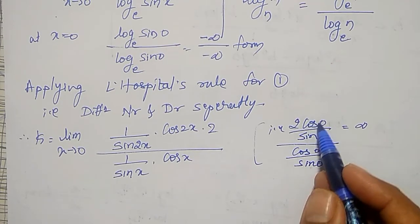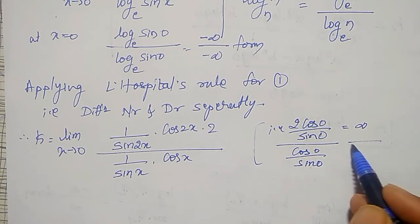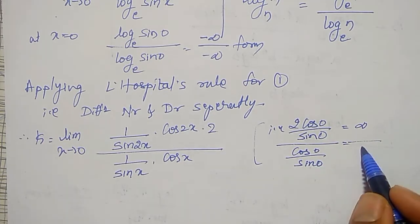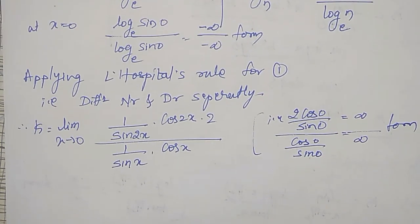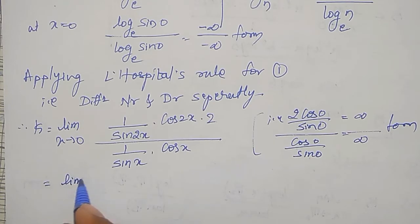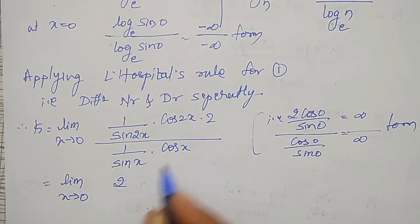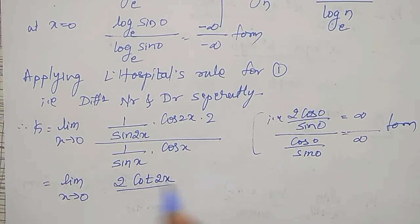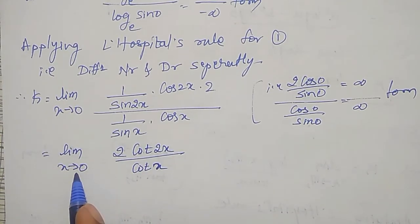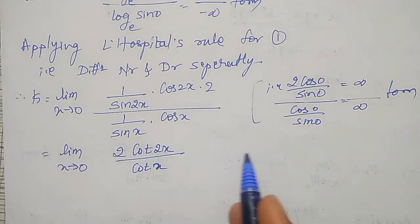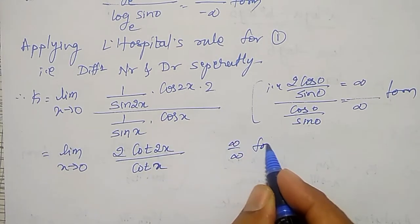As cos 0 is 1, 1 by 0 is infinity — here also the same thing. That is the same infinity. Again it is in the infinity by infinity form. As it is, I can apply L'Hôpital's rule, or I can simplify first. That I can write as limit as x tends to 0 of 2 times cot 2x divided by cot x. If you put x equal to 0, cot 0 is again infinity, which is again infinity by infinity form.